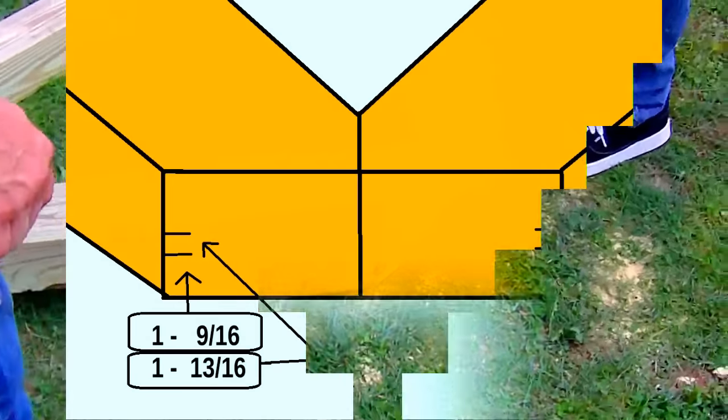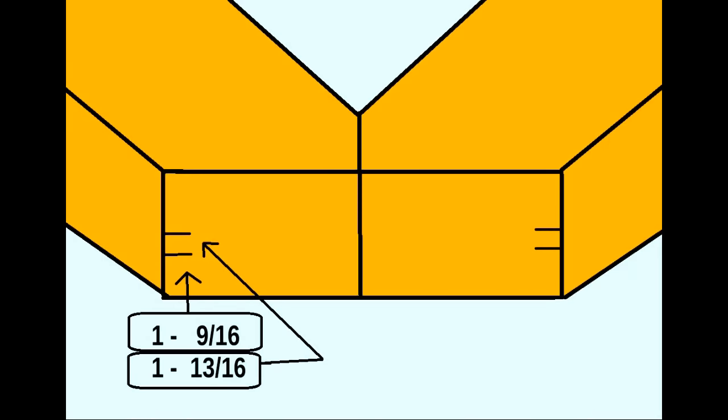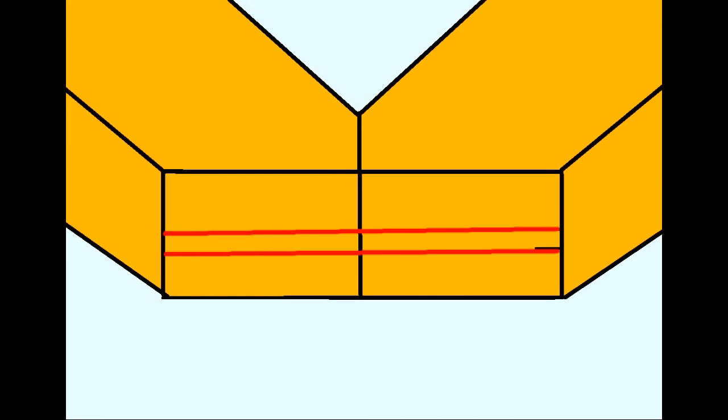On both sides at the bottom, mark a point at 1 and 9/16 inches and 1 and 13/16 inches. Now connect your two lines. Continue these lines down either side for about 10 inches.